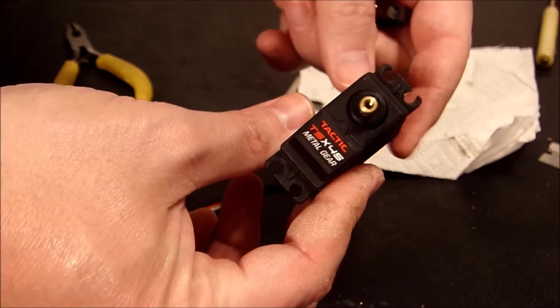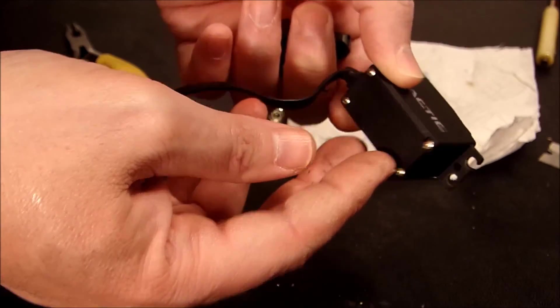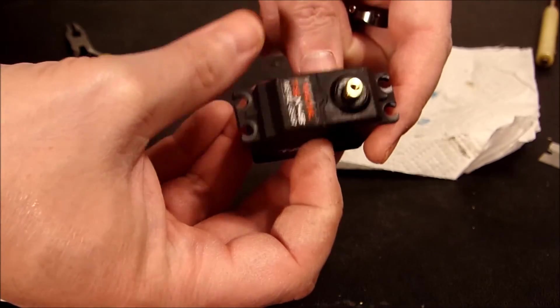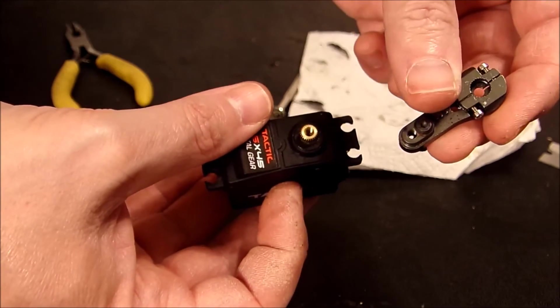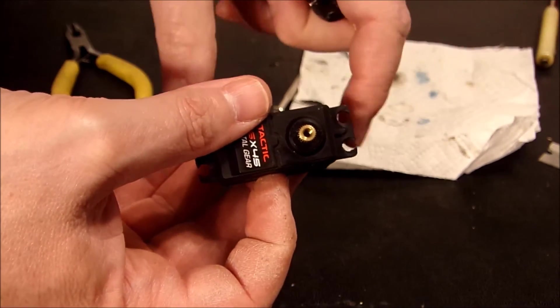And there we go, we have all four screws back in the case. Everything's back together nice and tight. We will go ahead and put our horn back on and then coat the case with liquid electrical tape.